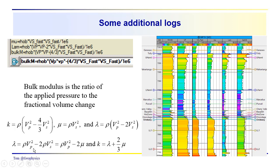These relationships and their interdependence are worth spending time with. Lambda is expressed in terms of the compressional wave velocity, the shear wave velocity, and density. It can also be written as the compressional wave velocity term minus two mu, since that is the basic definition of the shear rigidity. K is then equal to lambda plus two-thirds mu. When looking at these parameters, come back to these basic relationships and consider the density, the compressional wave velocity, the shear wave velocity, and the basic definitions of mu, lambda, and the bulk modulus.